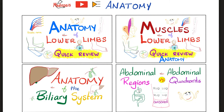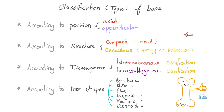Please try to watch the videos in this anatomy playlist in order. How do we classify bones? According to position, we have the axial skeleton versus appendicular skeleton — your vertebral column is axial, your femur is appendicular. According to structure, we have compact or cortical bone and cancellous, also known as spongy or trabecular bone. According to development, we have intramembranous and intracartilaginous — many skull bones are intramembranous, and most long bones are intracartilaginous. According to shape, we have long, short, flat, irregular, pneumatic, and sesamoid bones.